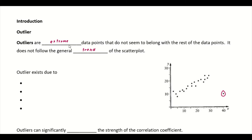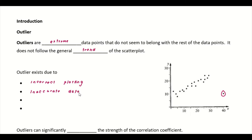If you're given a set of data and after drawing the scatter plot you realize there's an outlier, the first thing to check is whether you plotted anything wrongly. The first common case is that the outlier exists due to incorrect plotting — maybe when you keyed data into your calculator, you entered one value incorrectly, causing a point that doesn't follow the majority. But if after checking you realize all the data is correct, it might be due to inaccurate data collection — for example, someone recorded 27 marks as 72 marks.